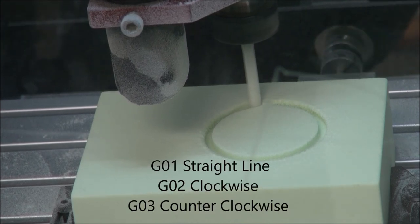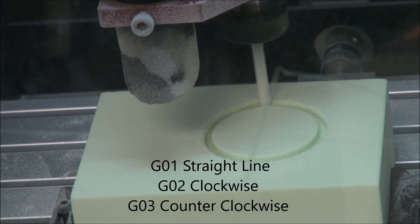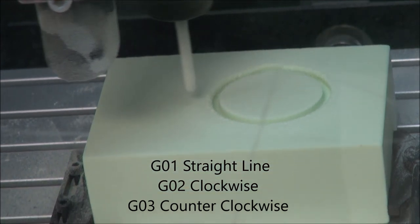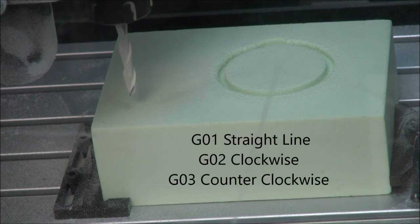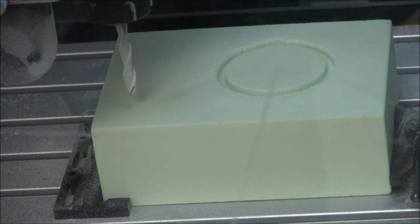So you know how to use the G01 which is straight line cuts. G02 is the clockwise cut. And then G03 would be the counterclockwise cut, the opposite of what you saw there.